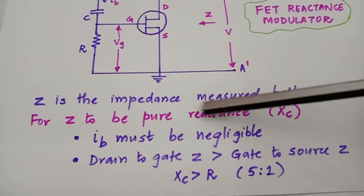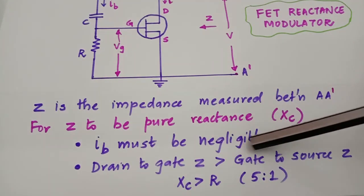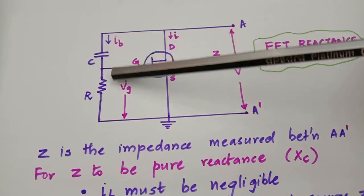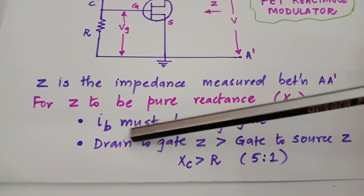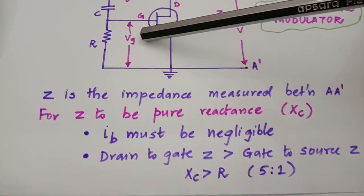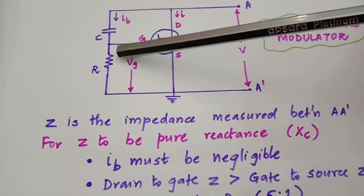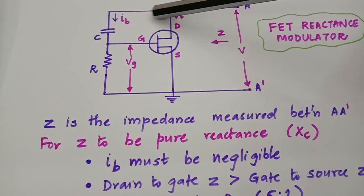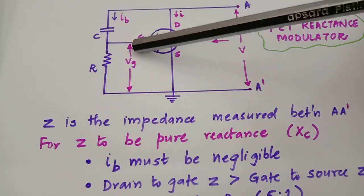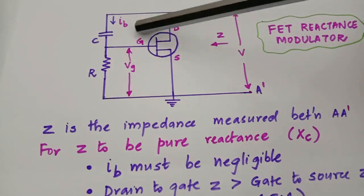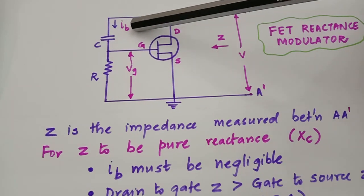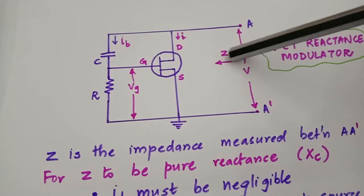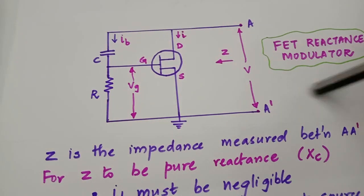The first condition is that the bias current IB must be negligible — very small — meaning this impedance should be very large. The second condition is that the impedance between gate and source should be less compared to the impedance between gate and drain. In other words, the capacitive reactance XC should be very large compared to the resistance. Only if these two conditions are satisfied can we say that impedance Z will be a pure reactance.